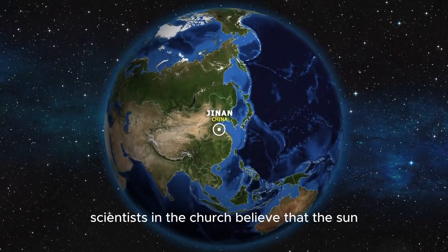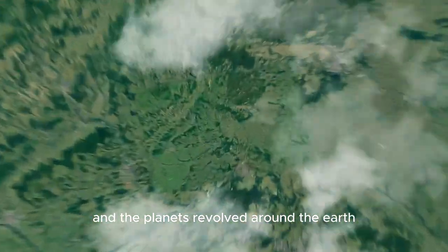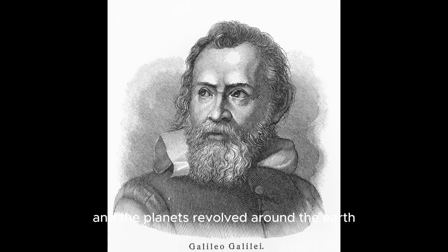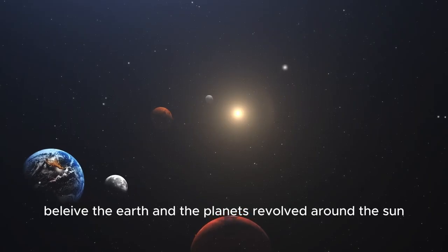During this age, scientists in the church believed that the sun and the planets revolved around the earth. Galileo and some scientists before, such as Copernicus, believed the earth and the planets revolved around the sun.